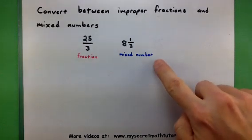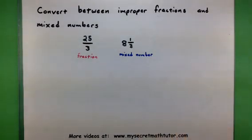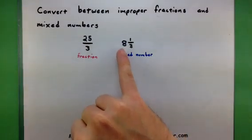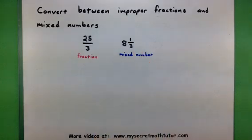Now on the right, I have a mixed number. It's called a mixed number because it's basically a mix of a whole number, like the eight, and a fraction part, like the one-third.